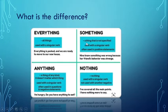Something. A thing that is not specified. Used with a singular verb. Often used in positive statements. Here we have the example. Nina knew something was wrong because her friend's behavior was strange.